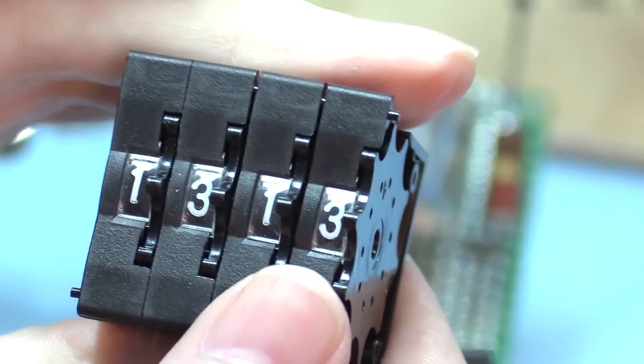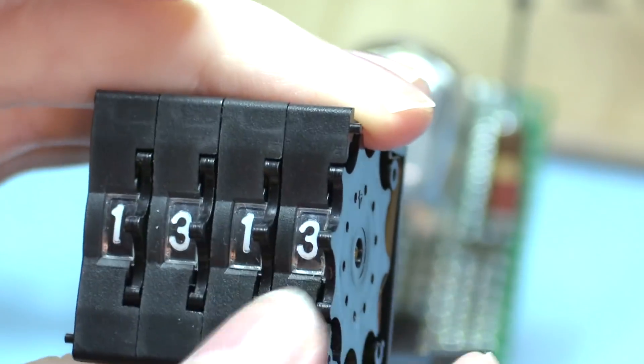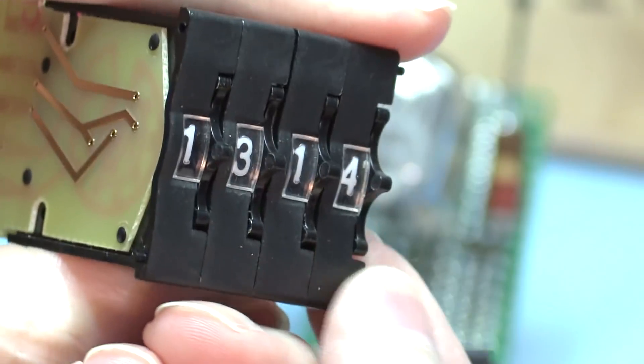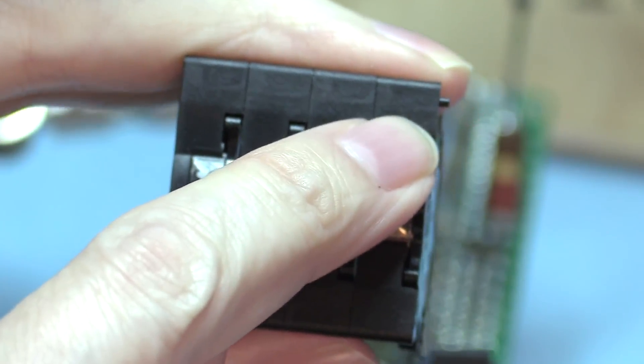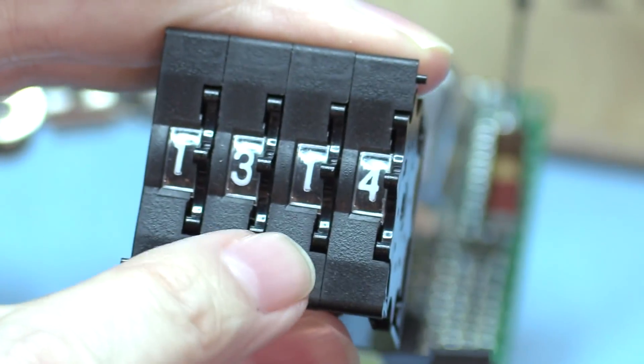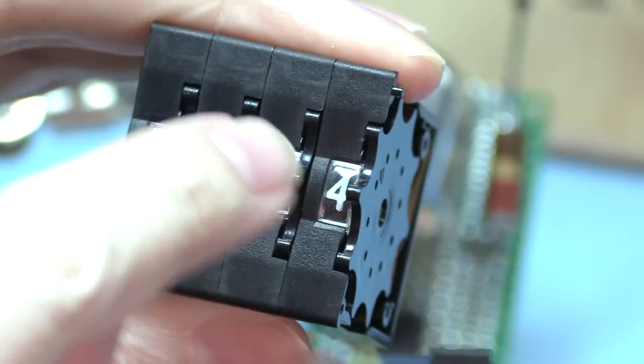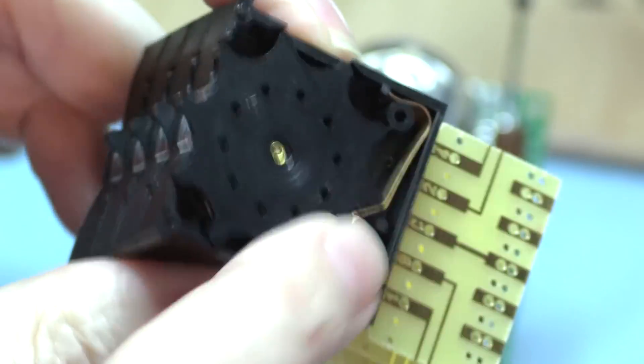They do have another version of this called push wheel, which is basically exactly the same thing, only instead of having the little star-like thing where you flip it with your thumb, it's got a switch, like a little push switch on the top and bottom, and you can push up or push down to change the number. It's the same thing inside, it's just you've got a push button instead of a thumbwheel. But I absolutely love these.